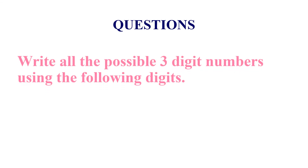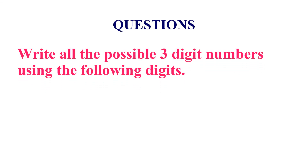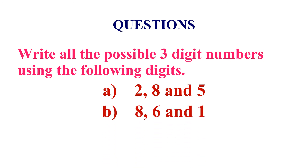Now, it is question time. Write all the possible three digit numbers using the following digits. A: 2, 8 and 5. B: 8, 6 and 1. C: 4, 7 and 0.